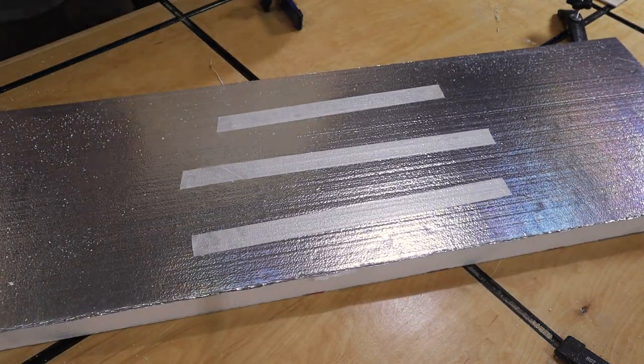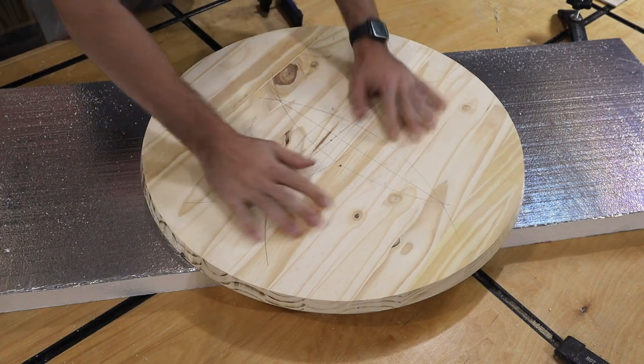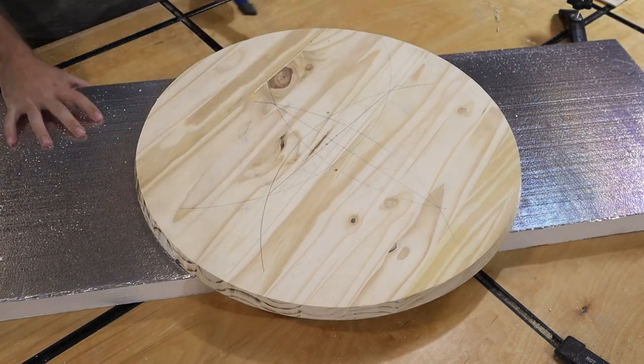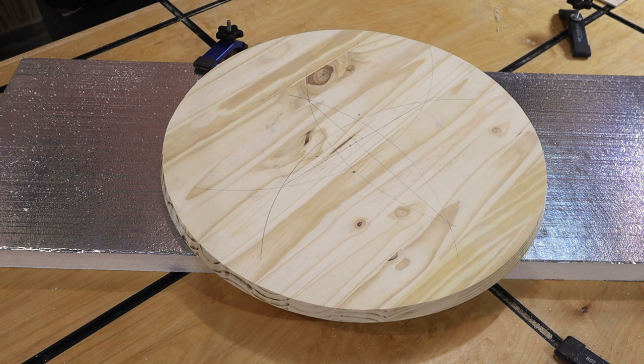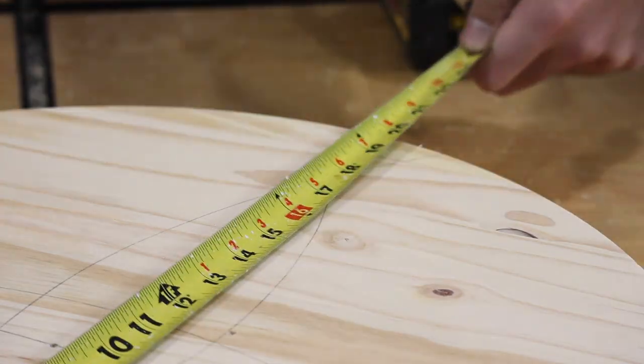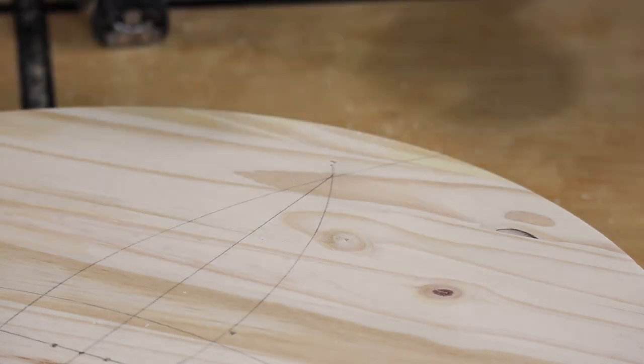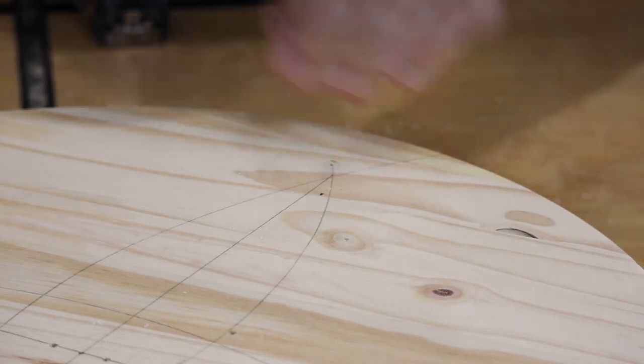With my center found, it's time to cut out the ring. Now, I don't want to cut into my nice table, so I used some leftover foam, put some double-stick tape on there, and stuck the whole piece onto it. I'm drilling a hole for the starting position of my router that matches the size of my router bit. This also allows me to accurately set the diameter of the ring.